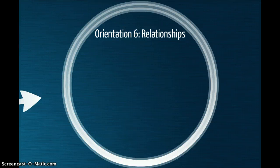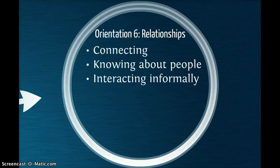Orientation 6 is about relationships. This part of the community emphasizes the interpersonal aspects of learning together. It puts a high value on knowing each other personally. It includes connecting, knowing about people, and interacting formally. Signs of life include networking, bonding, and friendship references to personal lives.